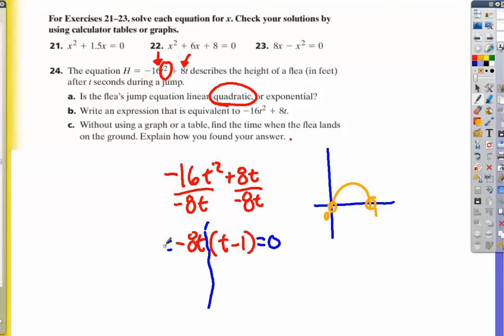So I'm going to set both linear components equal to 0. Obviously, this t equals 0. You should have seen that enough at this point. And this t is going to equal 1. This is when he starts, this is when he lands. He was in the air for 1 second.